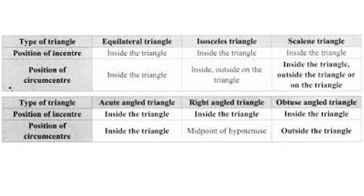Now coming to page number 85, you have an activity. Draw different triangles of different measures and draw incircles and circumcircles of them. Complete the table of observations and discuss. The table lists types of triangles: equilateral triangle, isosceles triangle, scalene triangle, acute angle triangle, right angle triangle, and obtuse angle triangle.